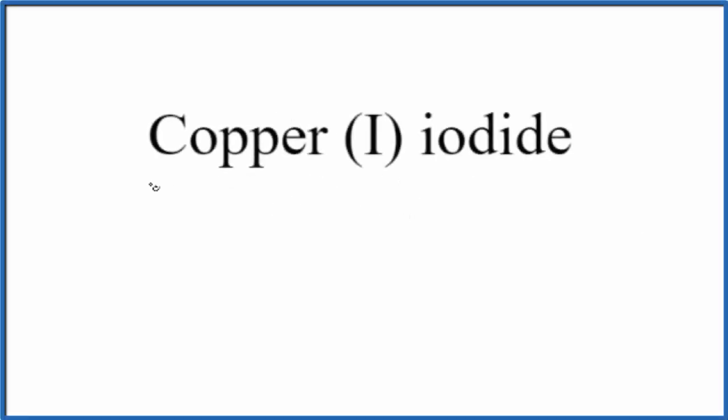In this video we'll write the formula for copper one iodide. As we look at this, the first thing we see is copper, so we can just write Cu for copper. This one we'll go back to in a minute.